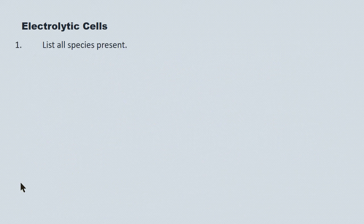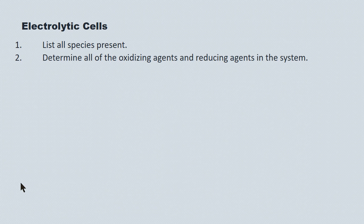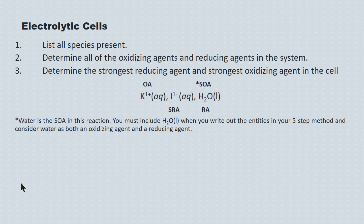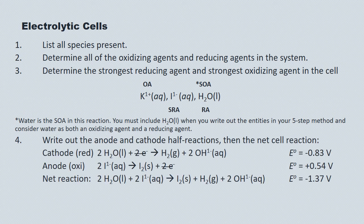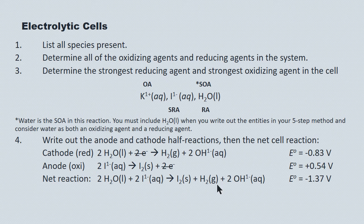Keep in mind that it's not just potassium iodide but potassium iodide in water, which has to be considered in redox systems. Using the five-step method, we list all species present — potassium ion, iodide ion, and water molecules — then determine all oxidizers and reducers, and then the strongest oxidizer and strongest reducer. The strongest oxidizer is water; the strongest reducer is iodide. The reduction at the cathode is the reduction of water (the strongest oxidizing agent), and at the anode we see the oxidation of the iodide ion into iodine. The overall reaction has a negative voltage, which is expected in an electrolytic cell — non-spontaneous reactions have negative voltages.